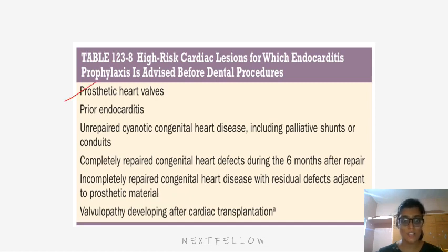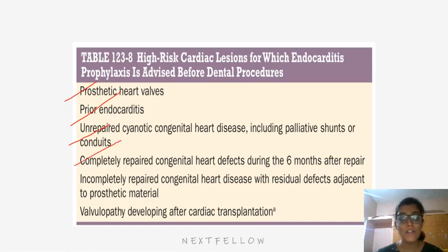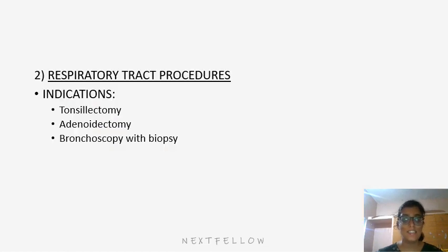High-risk cardiac conditions in which endocarditis prophylaxis is advised for dental procedures include: prosthetic heart valves, prior endocarditis, unrepaired cyanotic congenital heart disease including palliative shunts or conduits, completely repaired congenital heart defects during the 6 months after repair, incompletely repaired congenital heart disease with residual defects adjacent to prosthetic material, and valvulopathy developing after cardiac transplantation. It is also indicated for certain respiratory tract procedures like tonsillectomy, adenoidectomy, and bronchoscopy with biopsy.